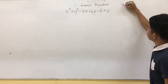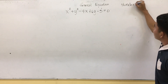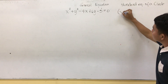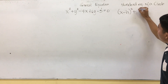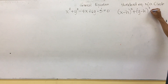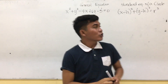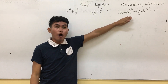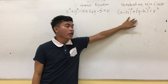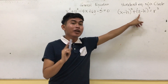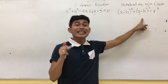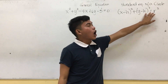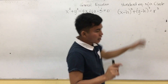So the standard equation of a circle is: x minus h squared plus y minus k squared is equal to r squared. From this general equation we are going to transform it into this standard equation, where h and k is the center of your circle and r is the radius of the circle.